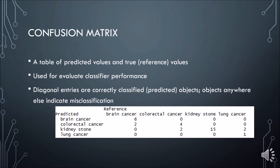Over here I have an example of a confusion matrix. You have the predicted value versus reference values. For example, of the six cases of brain cancer, all six of them have been classified as brain cancer. Two cases of actual brain cancer have been misclassified as colorectal cancer — predicted as colorectal cancer, in other words.